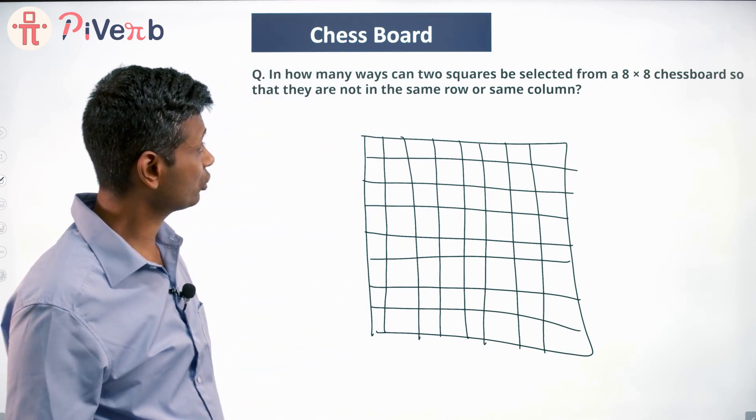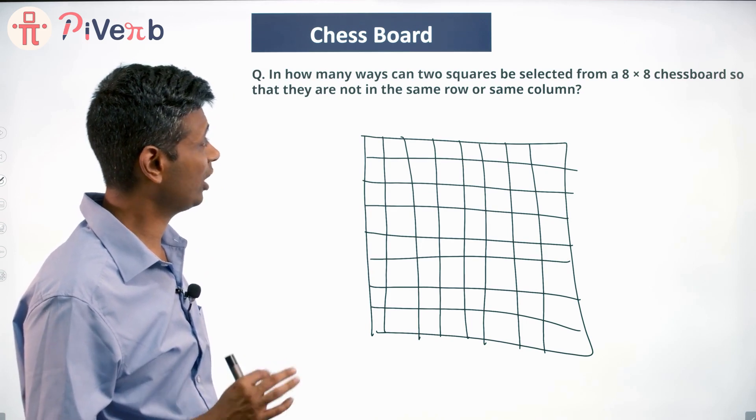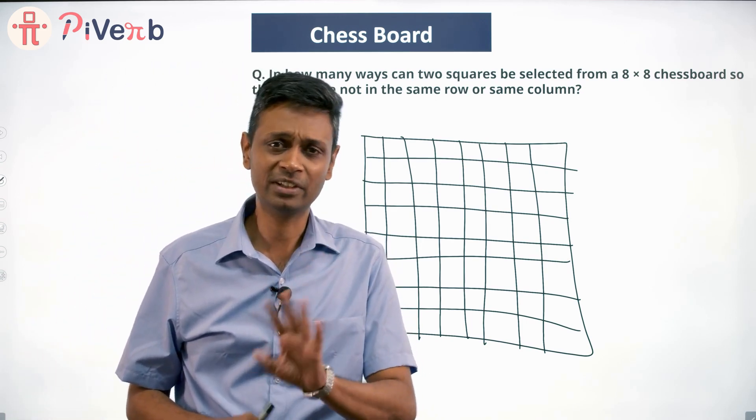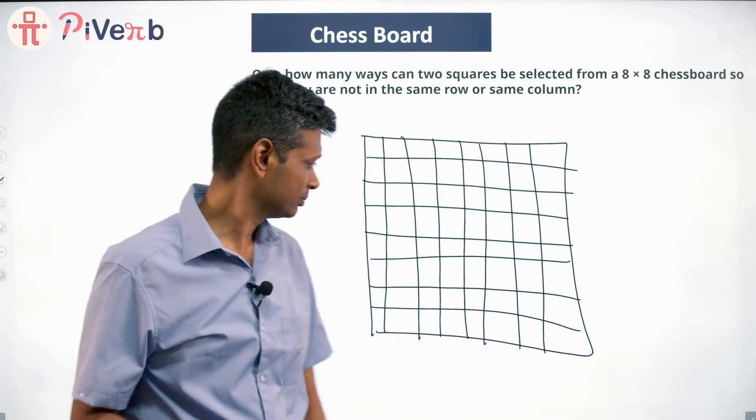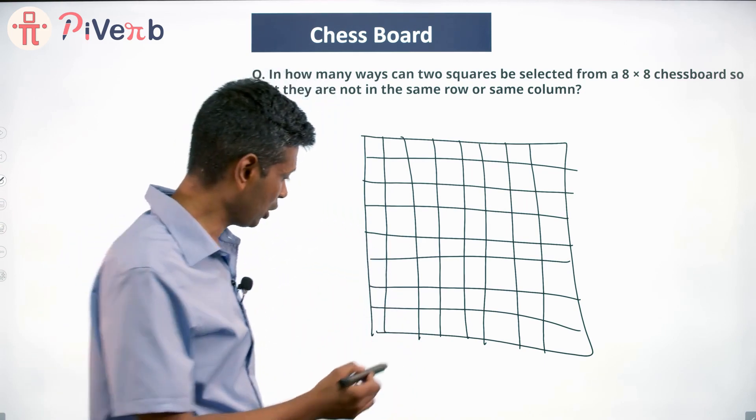We want two squares to be selected from an 8×8 chessboard so that they are not in the same row or same column. Let's first select one, then we'll select the second one. The first one can be any square.